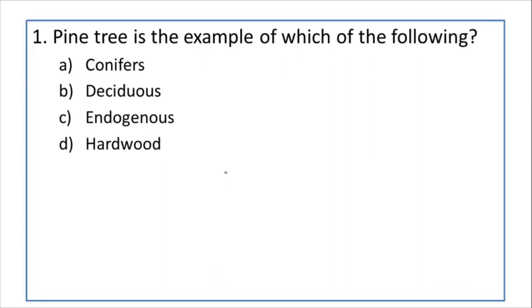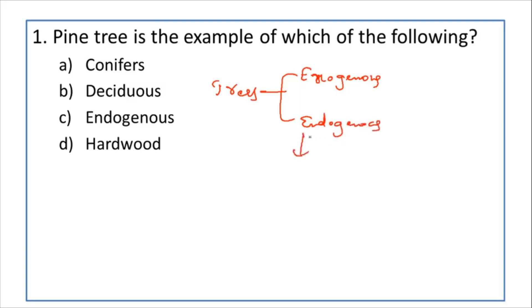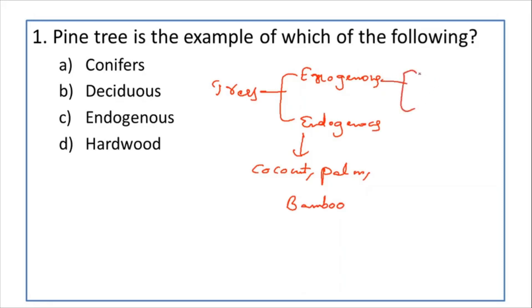The first question: pine tree is the example of which of the following? Trees are classified into two types: exogenous and endogenous trees. Endogenous trees are the tall trees that grow in the height direction. Examples of endogenous trees are coconut tree, palm tree, and bamboo tree.